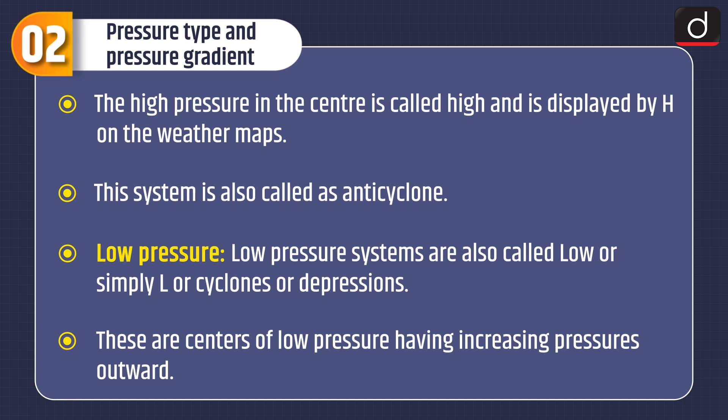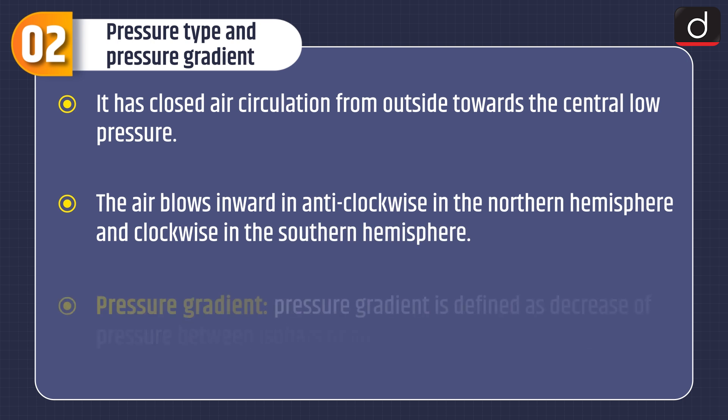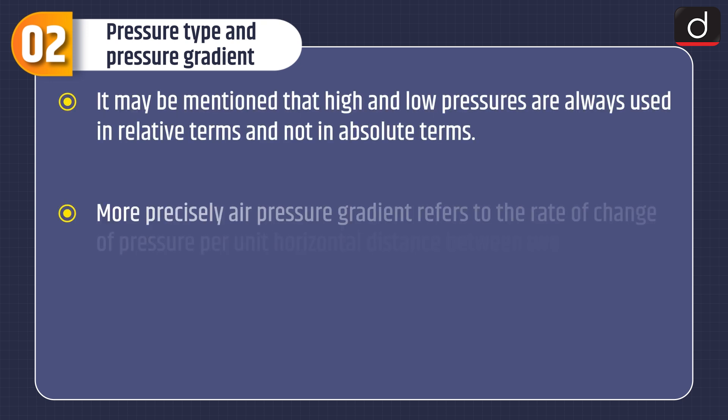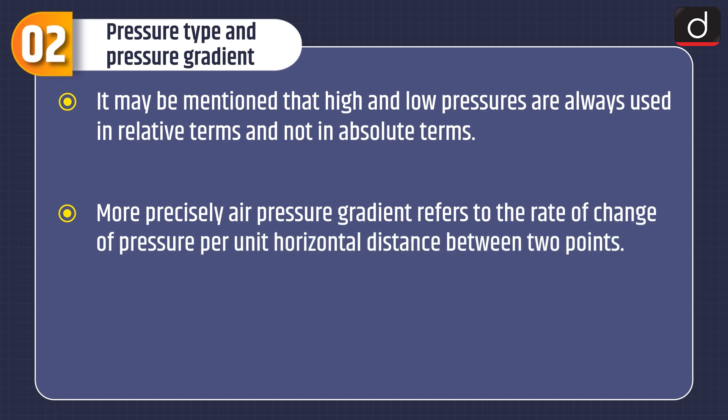Low pressure systems are also called low, cyclones, or depressions. These are centers of low pressure having increasing pressures outward, with closed air circulation from outside towards the central low pressure. The air blows anti-clockwise in the northern hemisphere and clockwise in the southern hemisphere. Pressure gradient is defined as the decrease of pressure between isobars from high pressure to low pressure. More precisely, air pressure gradient refers to the rate of change of pressure per unit horizontal distance between two points.